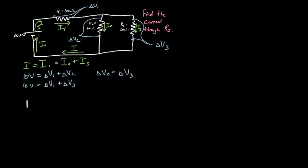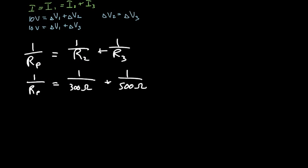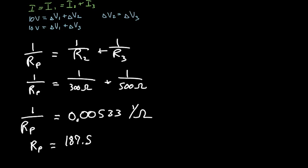For parallel components of the circuit, we'll use the equation 1 over Rp is equal to 1 over R, this one is 2, plus 1 over R3. And so 1 over Rp is going to be equal to 1 over 300 ohms, plus 1 over 500 ohms. So we'll put the right side into the calculator to get 1 over Rp equals 0.00533. And then the units on that are 1 over ohms at this point. And then Rp all by itself, we'll just take the inverse of both sides and find that our equivalent resistance is 187.5 ohms.